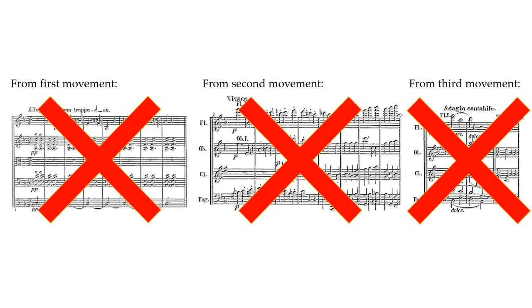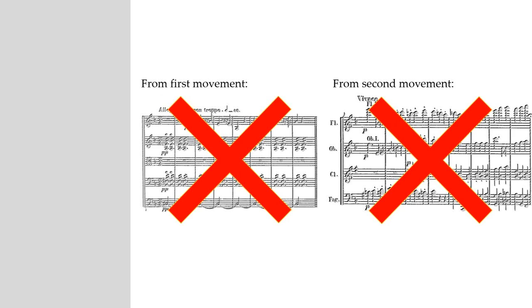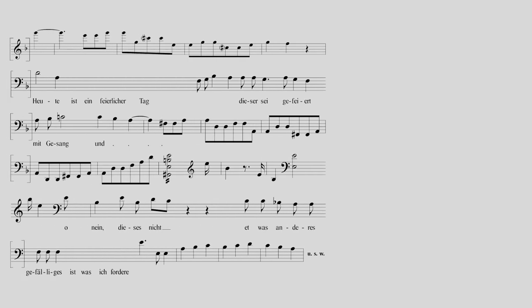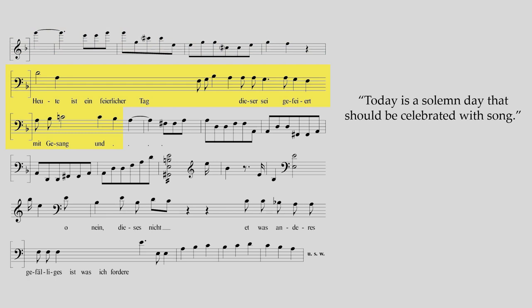We know that this is what Beethoven intended, and we also have a pretty good idea of the grounds for each rejection, because Beethoven originally wanted this dialogue to unfold between the orchestra and a solo voice. An early sketch gives us a rough outline of what Beethoven wanted the voice to sing — and these are Beethoven's own words, not from Schiller's poem. From this sketch, we learn that after the Schreckenfanfare, the singer would proclaim: 'Today is a solemn day that should be celebrated with song.' But what song would that be? A brief quotation from the first movement is given.